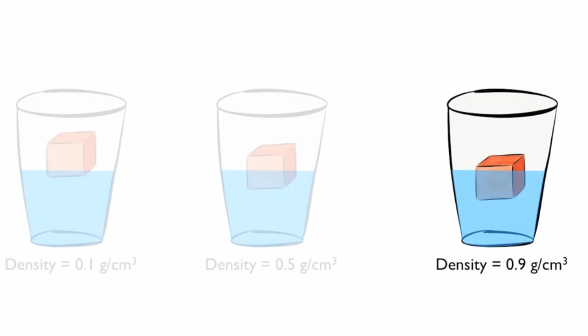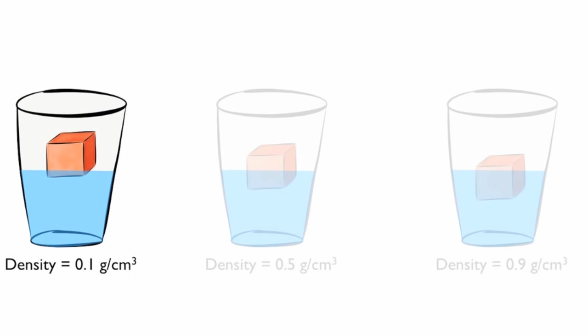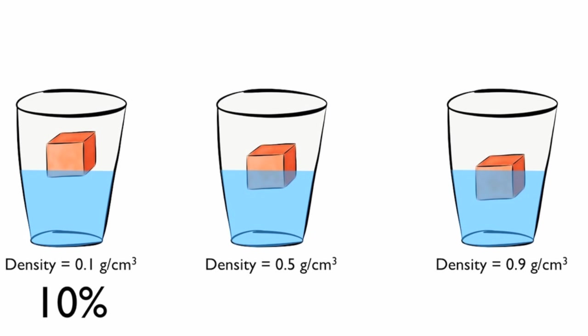We can see that as density increases, more of the block is below the water line. Scientists have discovered that the block's density tells exactly where the block will come to rest. If the density is 0.1, then 10% will be below the water line. To calculate where a block will come to rest, just convert density to a percent.